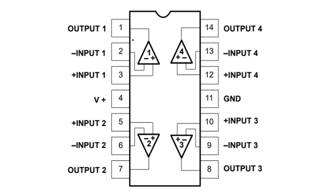This is the first pin of this IC because we have this symbol here — the left pin is pin number one. Then we count: one, two, three, four, and so on. For the first amplifier, it has two inputs: pin two and pin three are inputs for amplifier one, and pin one is the output.